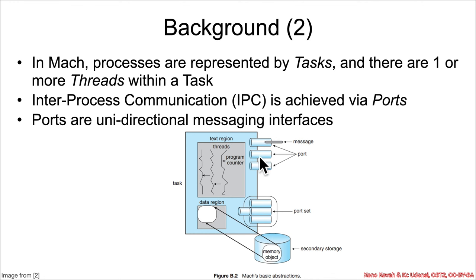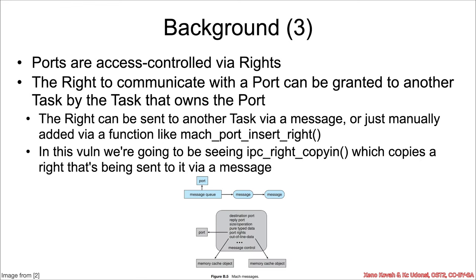Inter-process communication is done via unidirectional message interfaces called ports. One task can communicate to other tasks via ports, and tasks can communicate to the kernel via ports. Ports have access controls called rights, and the right to communicate with a port can be granted from one task to another by the task that owns the port — essentially saying 'here's the right to talk to me.'